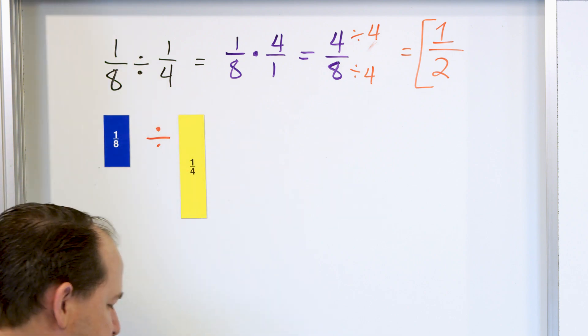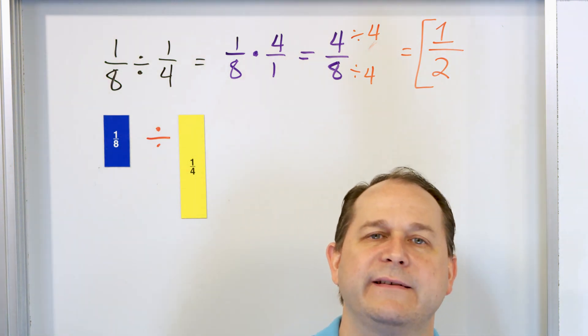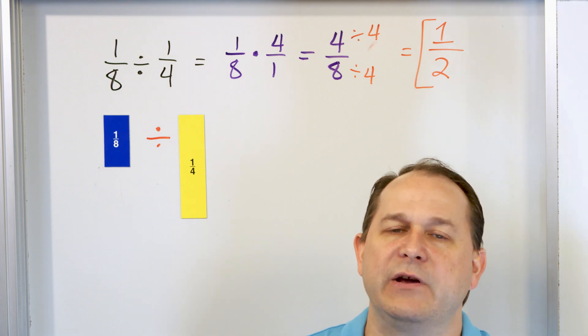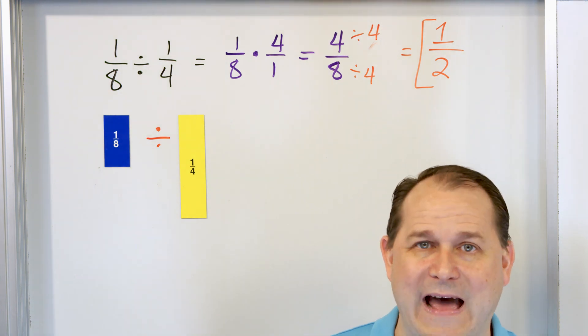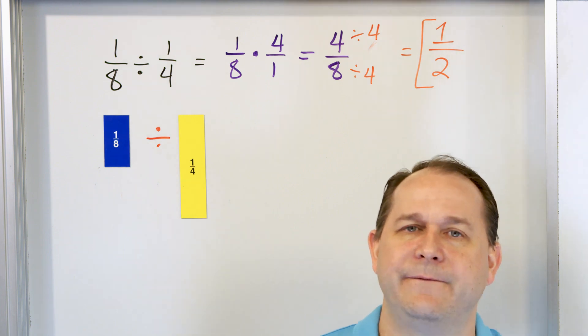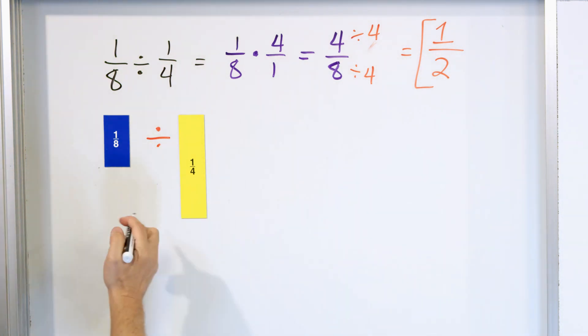So anytime you get a fractional answer, it's just representing how many times can it fit in. If you get a fraction, it doesn't even go once. That fraction tells you how much of that thing will fractionally fit in there.